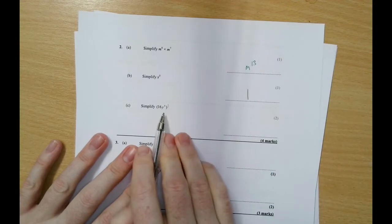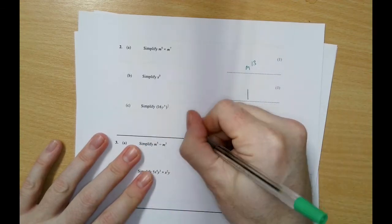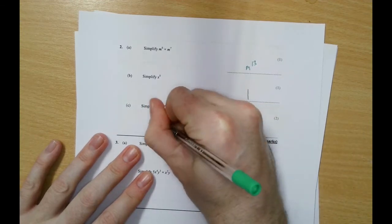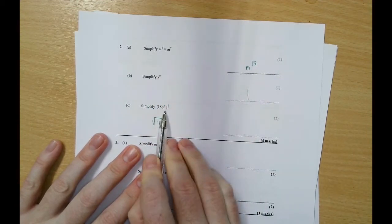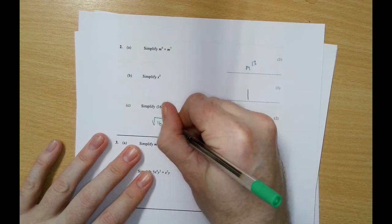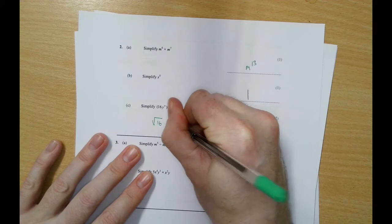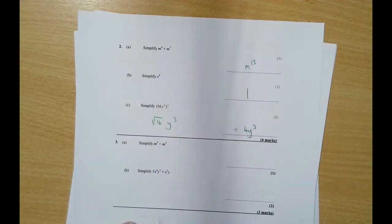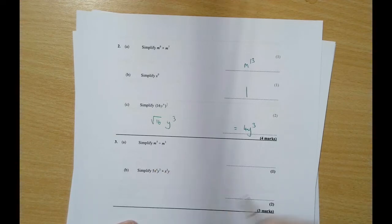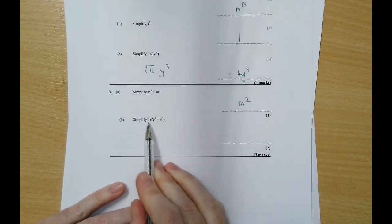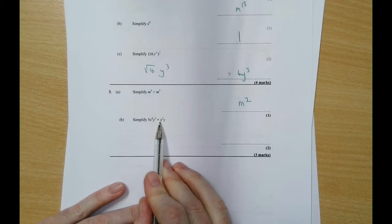To the power of a half means square rooting. So you want to square root the number, we're going to square root 16. And if you've got a half outside of a bracket with indices, you times those two together. So it's going to be y to the power of 3, which would then be 4 y cubed. Remember, dividing we're just literally taking them away, so it'd be m squared.